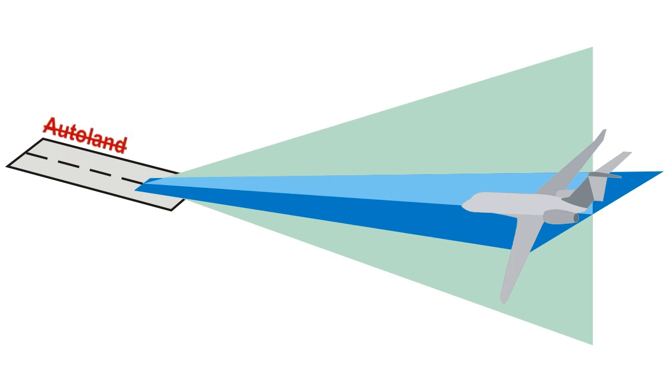However, not all airfields have instrument landing systems capable of autoland, and therefore legal restrictions apply. These restrictions are namely visibility and the height above ground that the pilot must be able to see visual references to land.